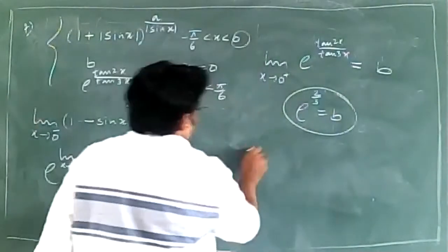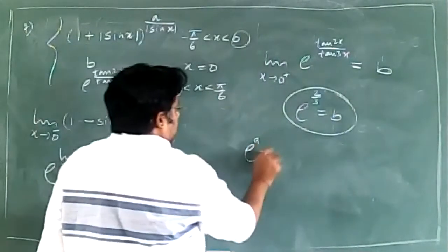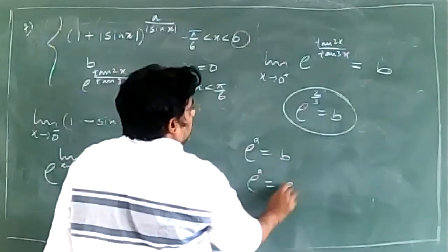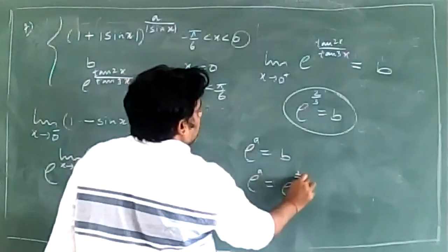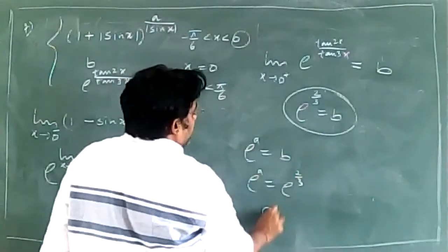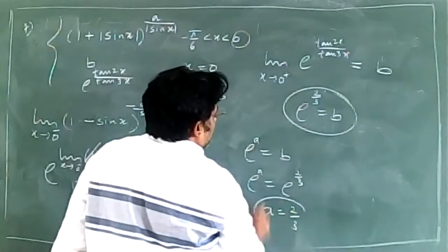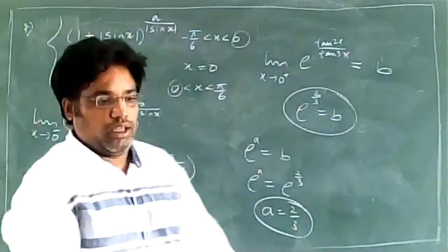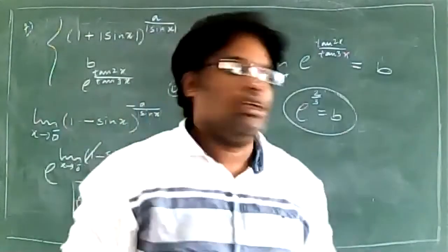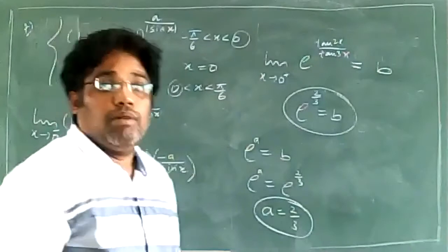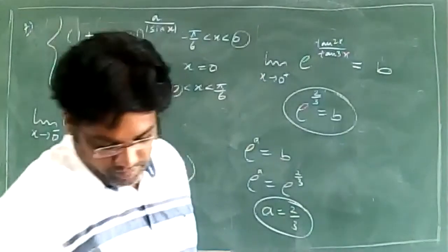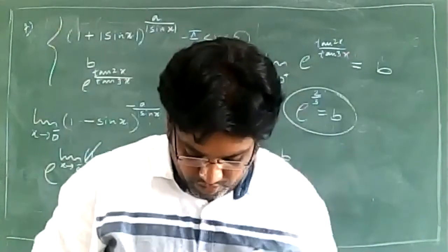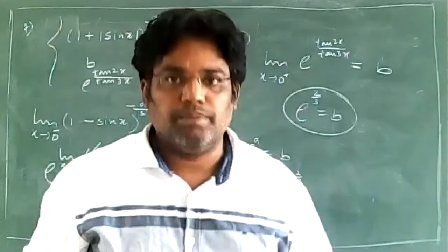What is a value? We know that e to the power a equals b, and b equals e to the power 2 by 3. Therefore a value is 2 by 3. So a is 2 by 3 and b is e to the power 2 by 3. That is option B.